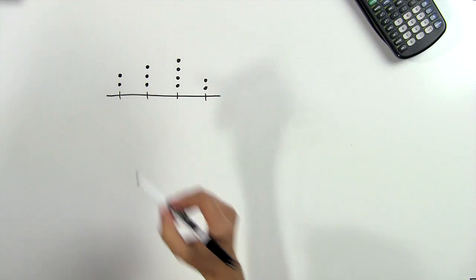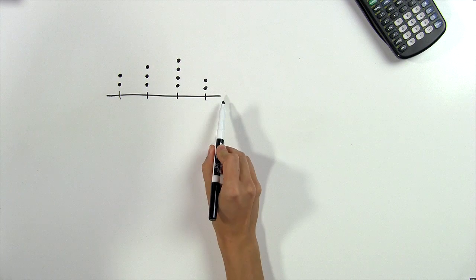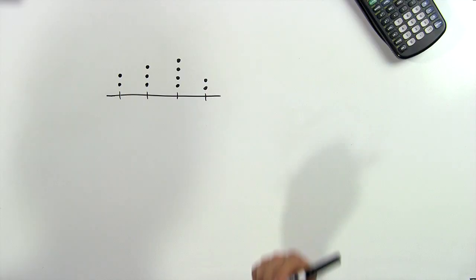For the most part, when someone talks about a dot plot or a line plot, they're actually talking about the same thing. They mean a graph that has one axis on a number line and dots above each mark on the number line.